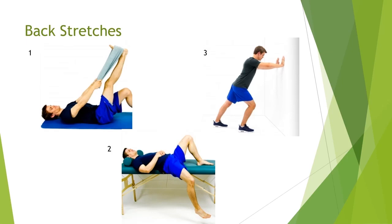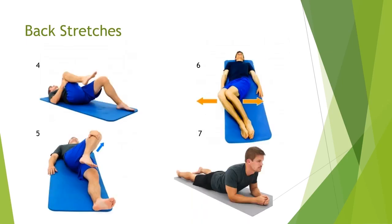Stretch number two targets a muscle on the front of the hip that also tends to get tight if we sit a lot and can pull on the pelvis. On the edge of your bed, leave one knee bent and let the other leg hang over the edge until you feel a stretch on the front of the hip or front of the thigh. Stretch number three is for our calves — if calf muscles get tight they can change the way we walk and that stress can travel all the way up the spine. With your hands against the wall or on a countertop, stagger your feet, keep your back foot straight and back knee straight, then bend your front knee until you feel a stretch on the back calf. Remember, all stretches are held for one minute.